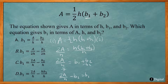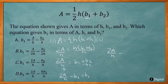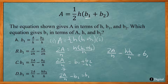The answer choices show b2 with a denominator, so we need a common denominator of h. That gives us 2a over h minus hb2 over h equals b1. The h over h fraction in b2 cancels, so that fraction is equivalent. So b1 equals 2a over h minus hb2 over h, which is answer D.